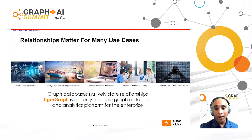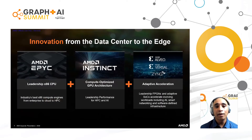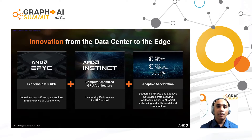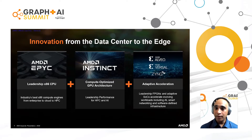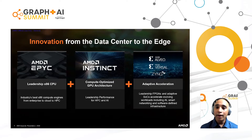AMD Xilinx is super excited to be part of this journey with TigerGraph. We have leadership products: the AMD EPYC, our x86 CPU, is the industry's best compute engine purpose-built to deliver high performance computing from enterprise to cloud. Our adaptive acceleration portfolio with Alveo, Versal, and Zynq has been continuously delivering leadership FPGAs and adaptive SoCs for accelerating algorithms. Kumar will really dive deeper into how this adaptive acceleration can deliver the performance benefits you're looking for.